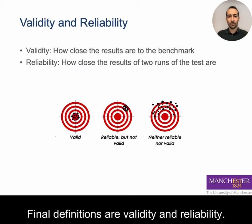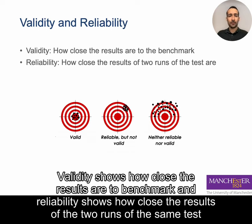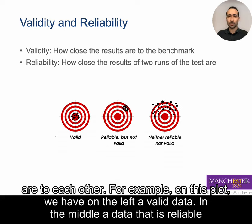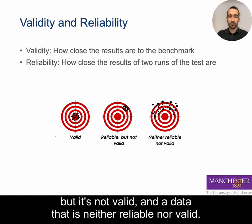The final definitions are validity and reliability. Validity shows how close the results are to the benchmark, and reliability shows how close the results of two runs of the same test are to each other. For example, on this plot we have on the left a valid dataset, in the middle data that is reliable but not valid, and data that is neither reliable nor valid.